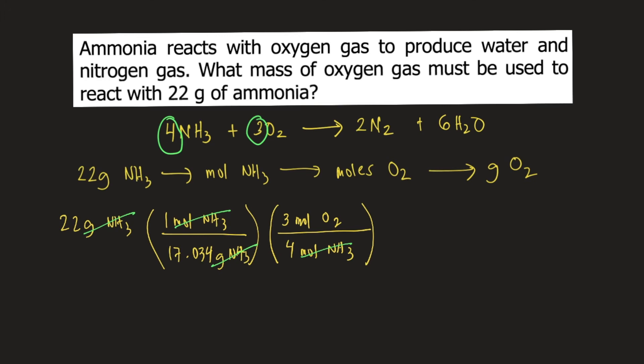Finally, to convert moles of oxygen gas to grams of oxygen gas, we need the molar mass of oxygen gas. 1 mole of oxygen gas weighs 32 grams. Moles of oxygen gas would cancel and our final unit is grams of oxygen gas.